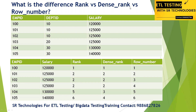Let's understand the data first. Here you see employee, department ID, and salary — this is the input table. Employees 100 to 105, with department IDs 10, 20, 30. Looking at salary: one employee has 20,000, then three consecutive members have the same salary of 25,000, followed by 30,000 and 40,000.